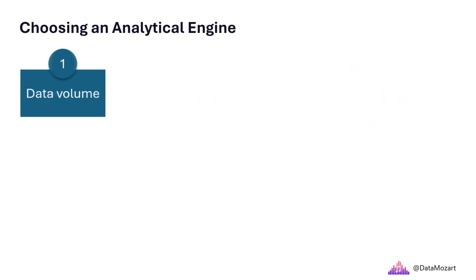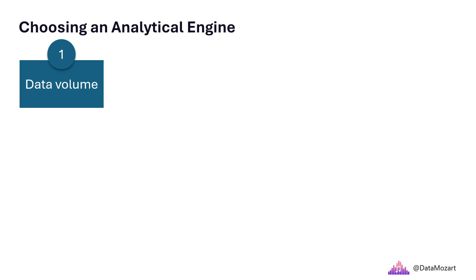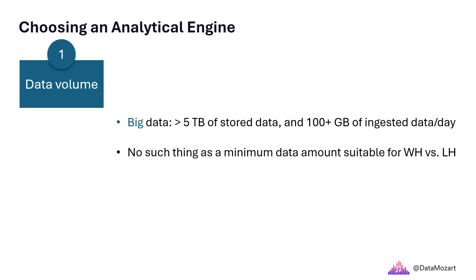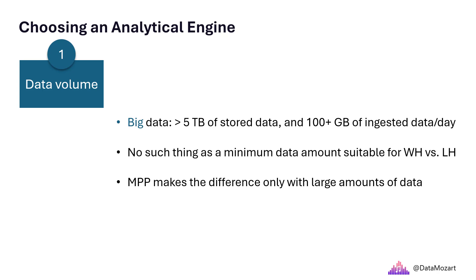Let's first talk about data volume. Although there is no single number that differentiates small and big data, we often refer to big data as an extremely large and diverse collection of data that continuously grows over time. For the sake of setting boundaries when making decisions, we will consider big data anything above 5 terabytes of stored data and 100-plus gigabytes of ingested data per day. When choosing the optimal analytical engine in Microsoft Fabric, there is no such thing as the minimum amount of data suitable for warehouse versus lake house or vice versa. In theory, you can store only a few records of data in any of the analytical stores in Fabric, but you'll start reaping the benefits of massively parallel processing, or MPP architectures, which are implemented in both Fabric lake house and warehouse, with large amounts of data only.